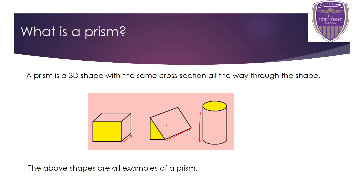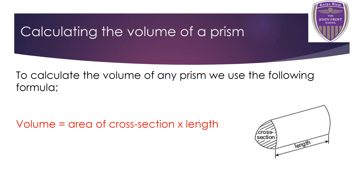The first one is a cuboid, the second one is a triangular prism, and the third one is a cylinder. They're all examples of a prism.